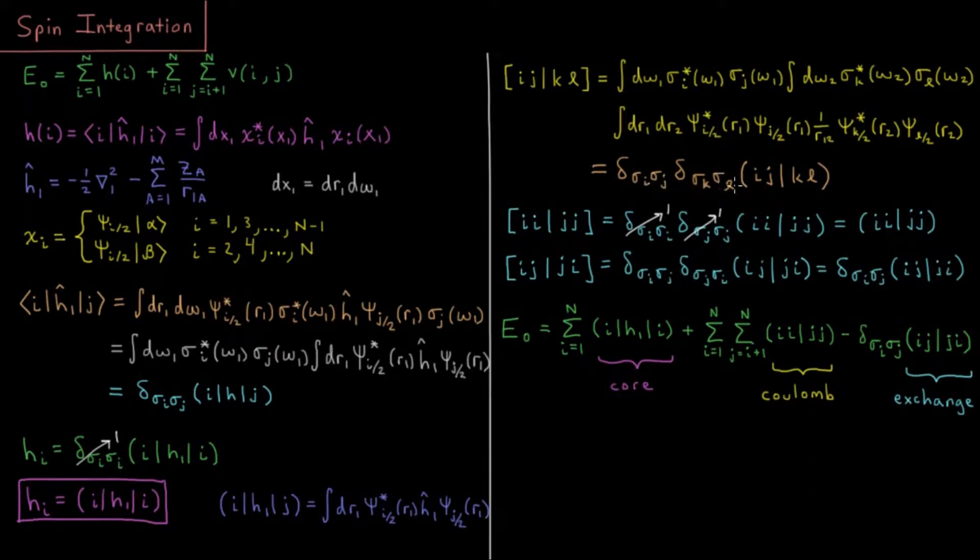So that leaves us with two Kronecker deltas and then a spatial integral that is left over for our two-electron integral, indicated with the parentheses notation.